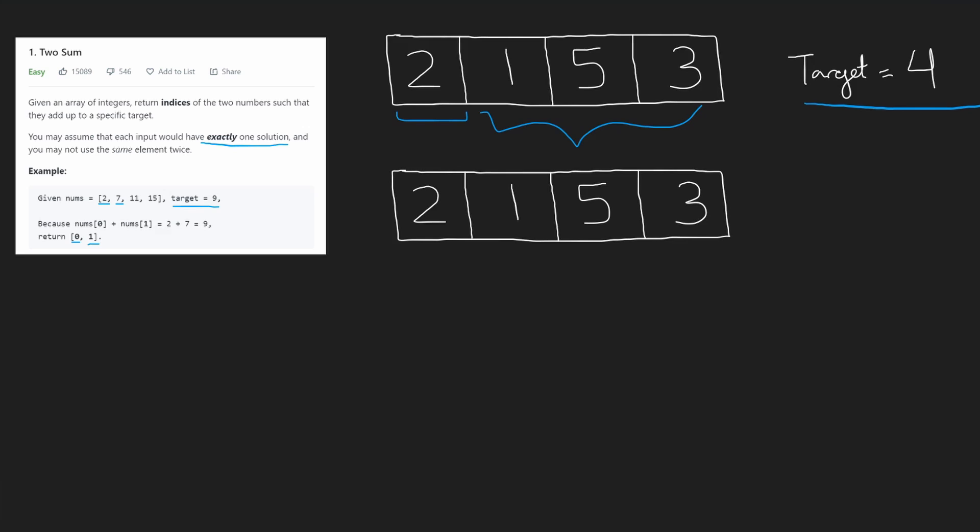So next, we can repeat the process. Let's check every combination including 1 that sums up to target 4. So we scan through every element that comes after it, 5 and 3, and we find that 1 added with 3 sums up to our target 4. Notice that we didn't have to check the values that came before 1 because we already checked the combination 2 and 1 when we were up over here. So we didn't have to repeat that work down here.